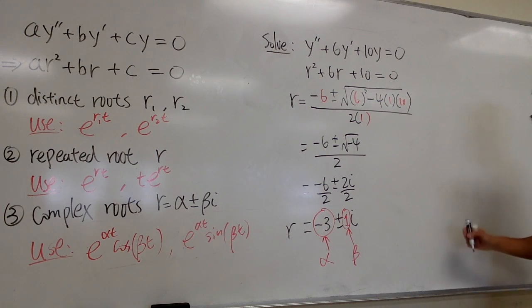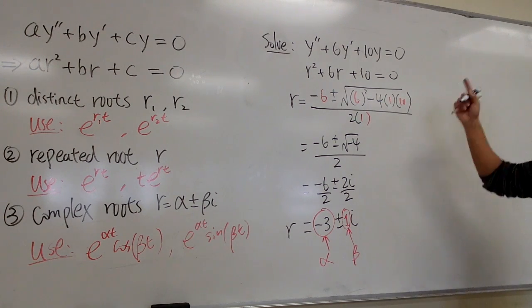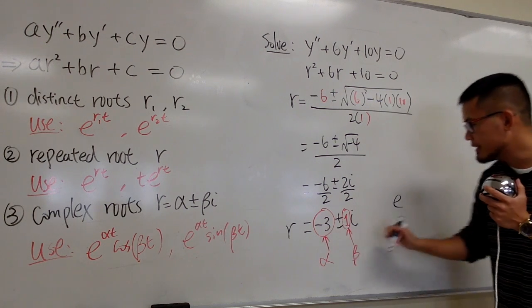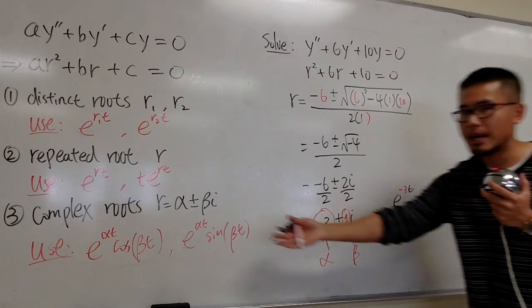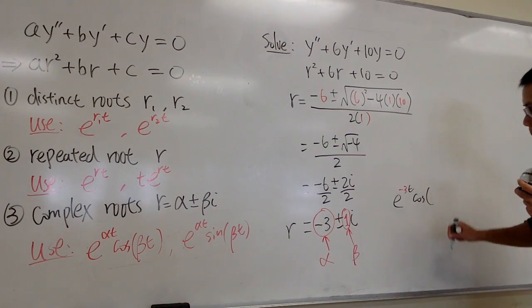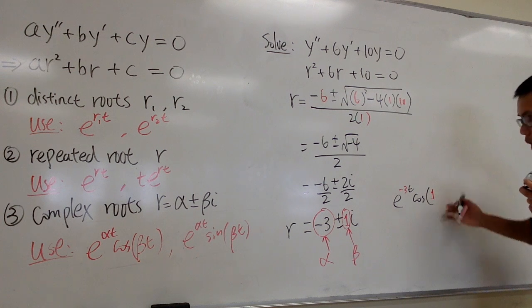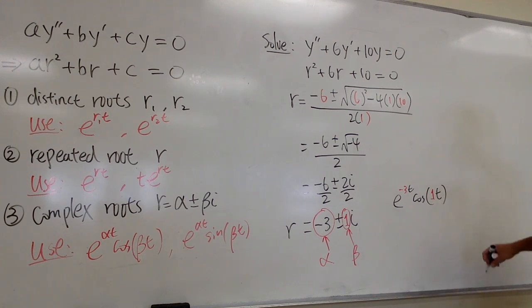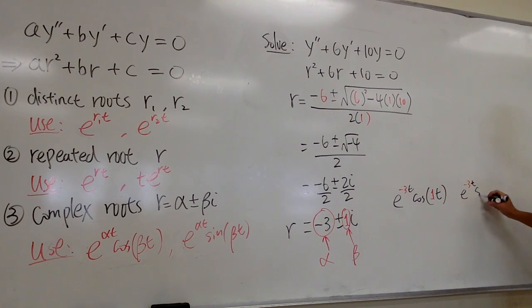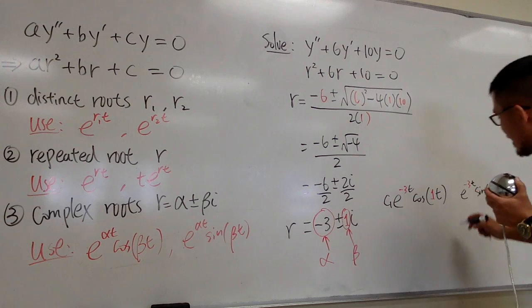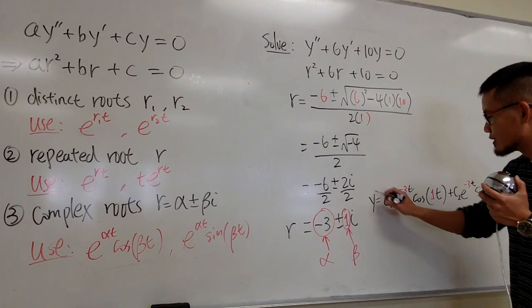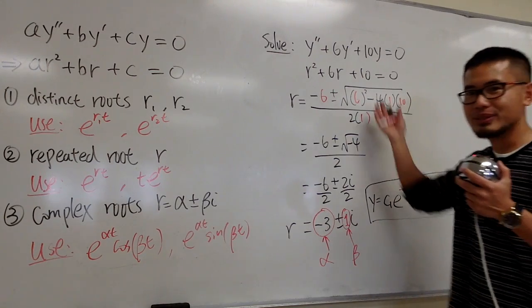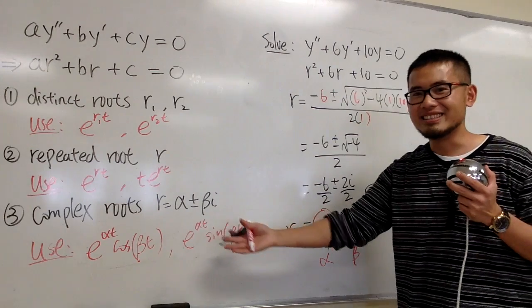With α = −3 and β = 1, we can write the general solution. The first building block is e^(−3t)·cos(1·t), and the second building block is e^(−3t)·sin(1·t). Multiplying by constants c1 and c2 and adding them gives the general solution to the differential equation. Nice and easy!